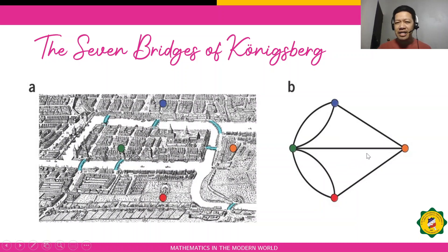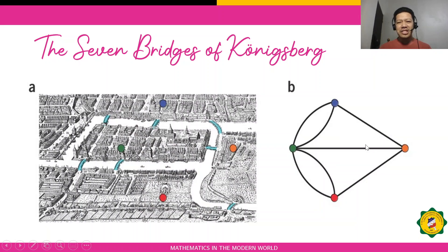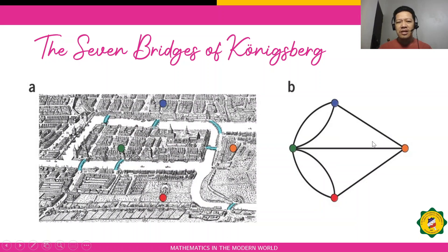So if all vertices are of odd degree, can we say this graph is an Euler path or an Euler circuit? It's not an Euler path, because there should be exactly two odd vertices. And it's not an Euler circuit either, because for an Euler circuit all vertices must be of even degree. Therefore, Leonard Euler's conclusion to this famous problem is: it is not possible to pass through all the bridges exactly once.